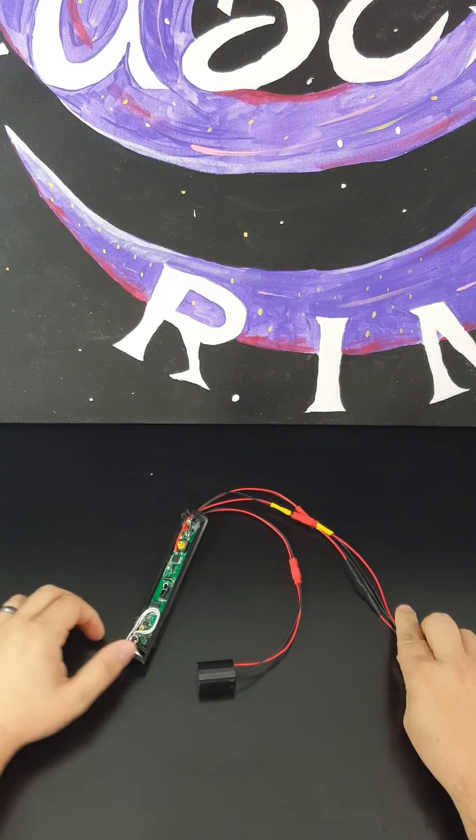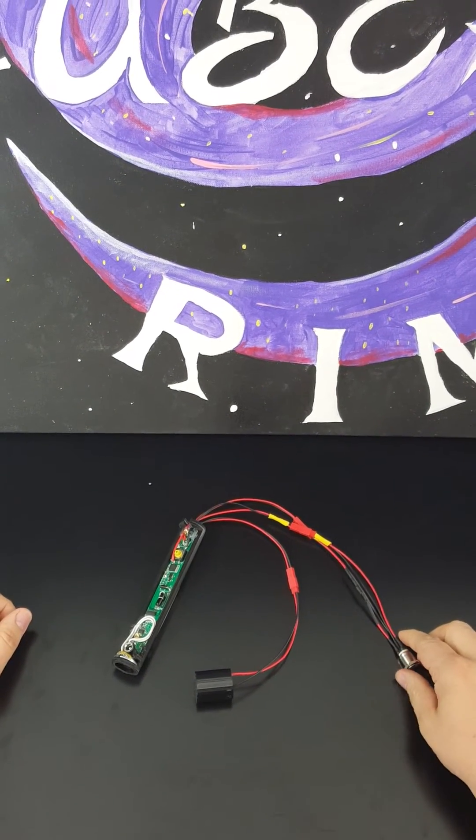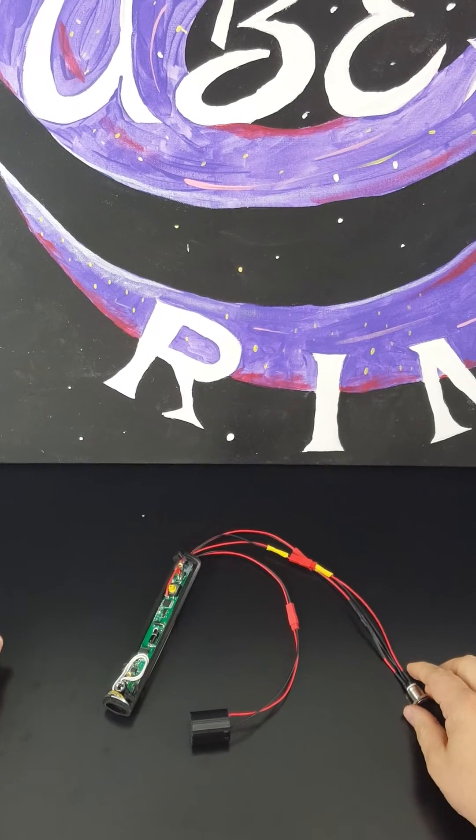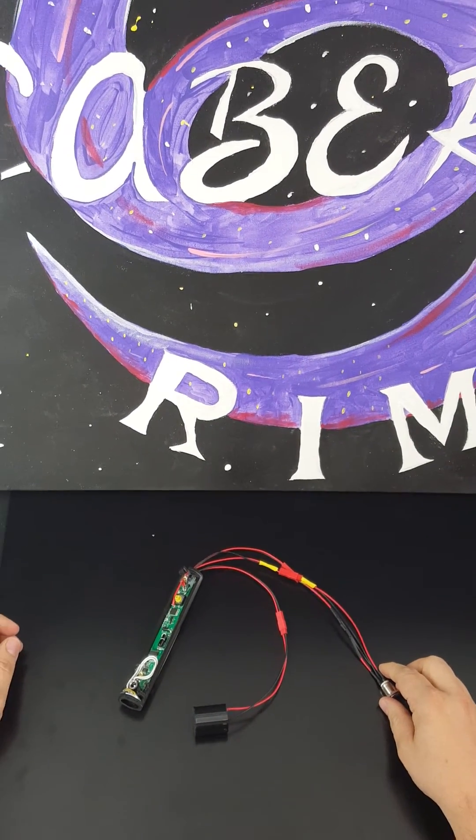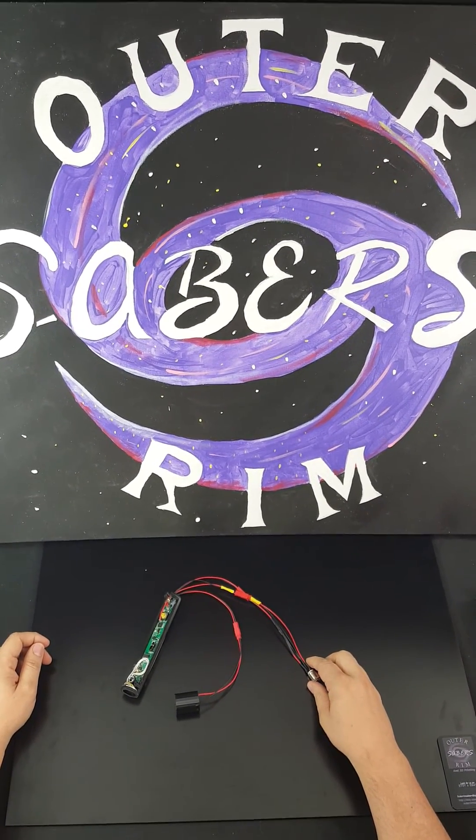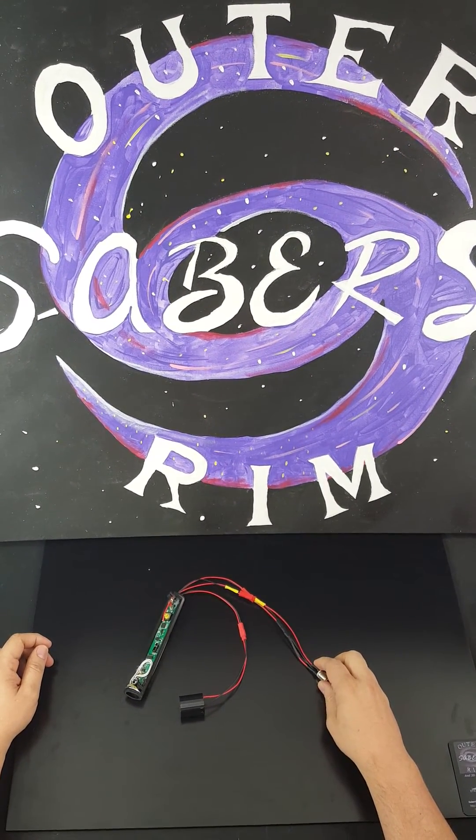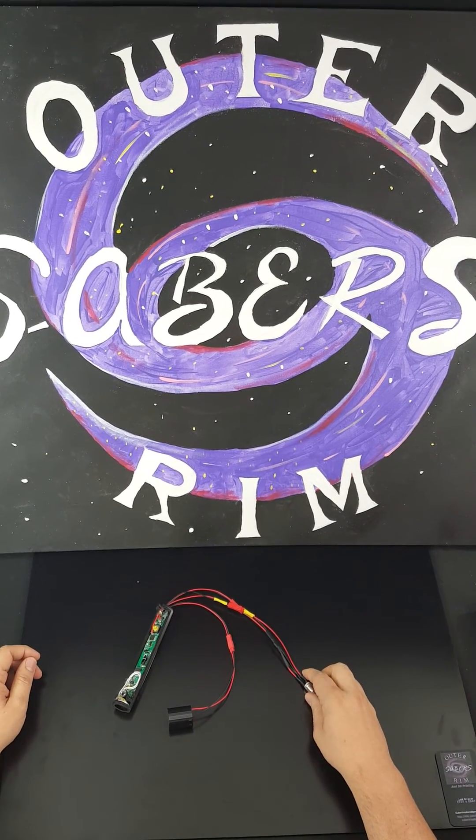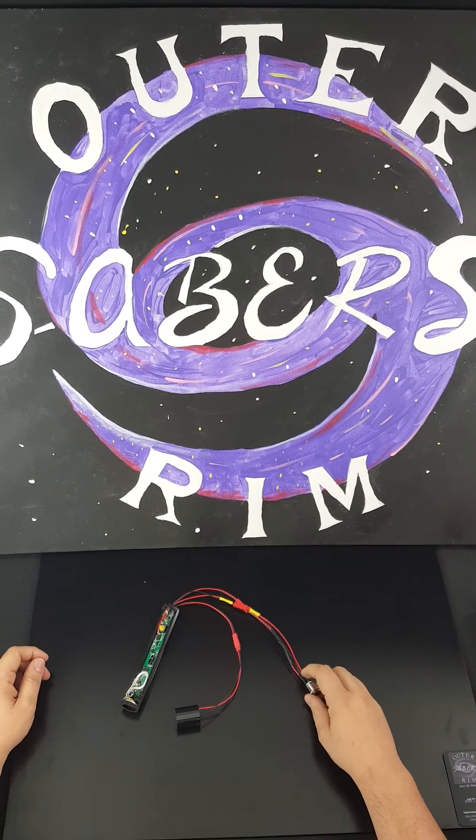Again, this is our new Tier 3 electronics kit. You should be able to find it on our Etsy page, www.etsy.com/shop/outerrimsabers, or we also will have it on eBay. So check it out when you get a chance. Thank you for watching.